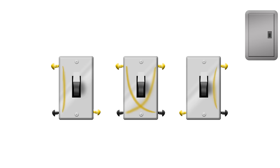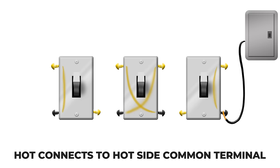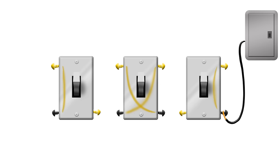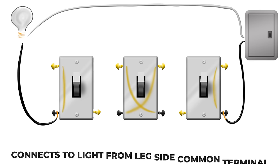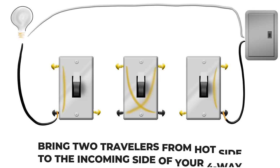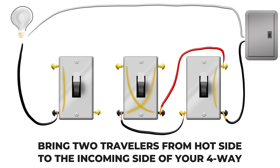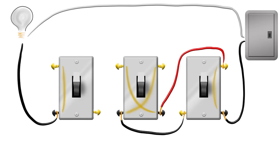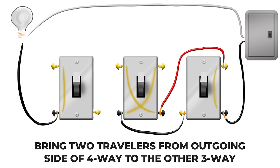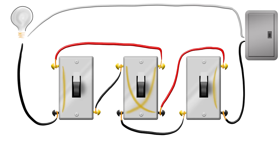So again we're going to have our hot side. That's where current comes into the circuit and then out here your switch leg that goes up to your light. From your hot side you're going to bring two travelers to the incoming side of your four-way. Then from the outgoing side of your four-way you're going to have two more travelers that go to the next three-way.